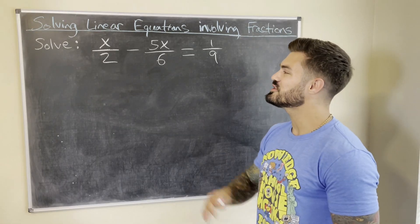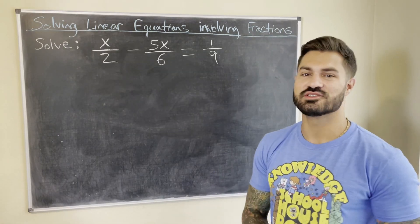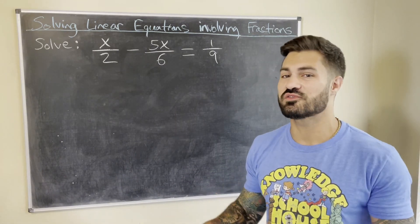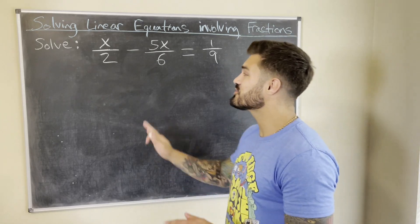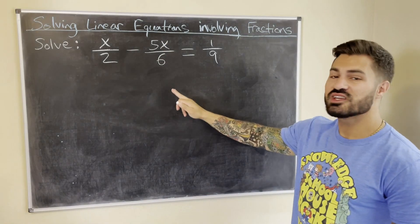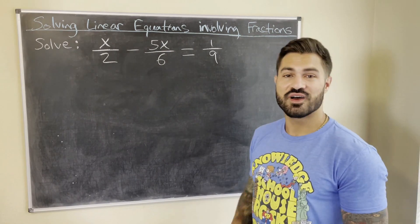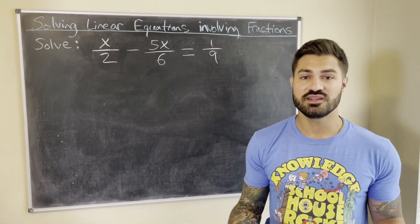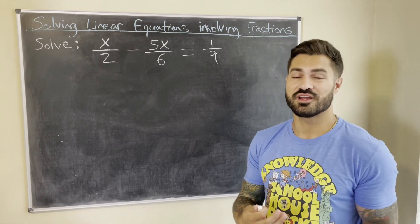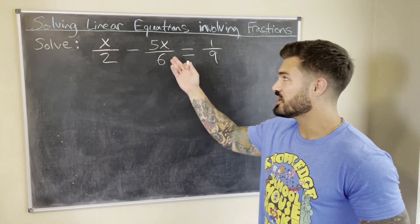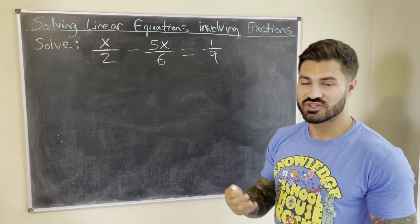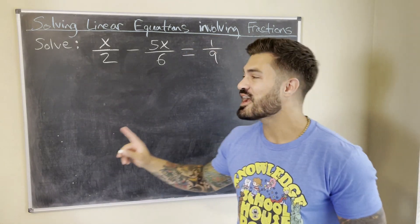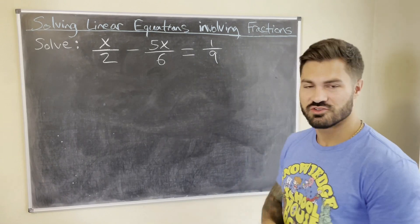In this next example we have an equation that involves three different fractions. This time, to figure out what to multiply both sides by to clear all the fractions, we need to find the least common multiple of 2, 6, and 9. That process can be a bit tedious with listing multiples, so I'm going to offer an alternate method for finding the least common denominator: prime factorization.